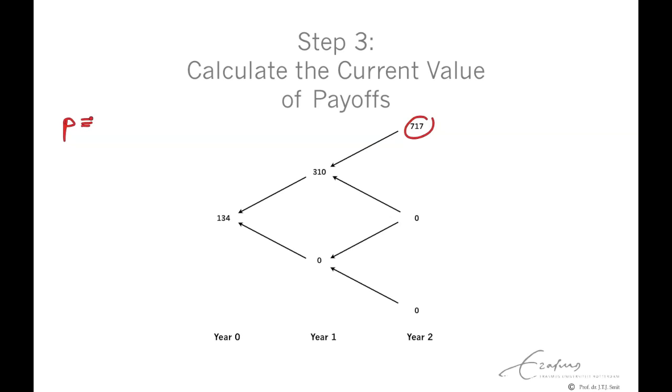We can calculate the risk-neutral probability from the underlying value. The risk-neutral probability, P, is defined as 1 plus the risk-free rate times the underlying value at time zero, minus the value at the downward state, divided by the value at the upward state minus the value at the downward state. In this case, we have 1.04 multiplied by the value at time zero, which is 852, minus V down, which is 568.